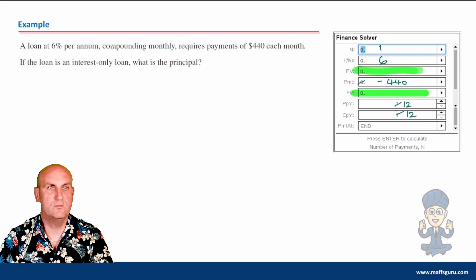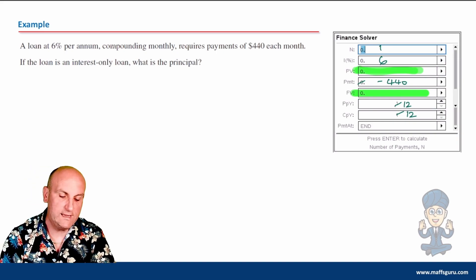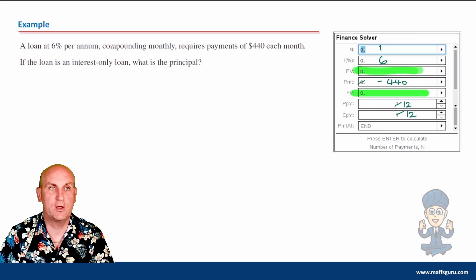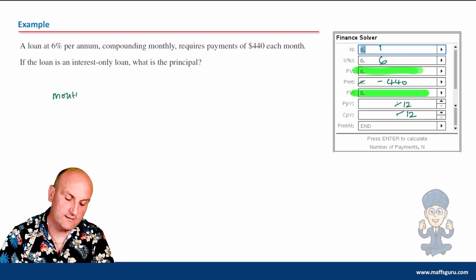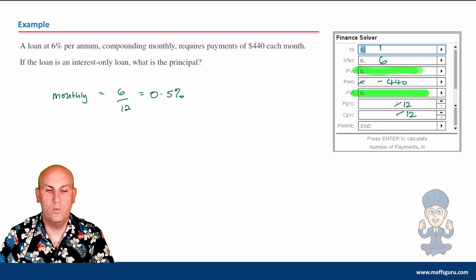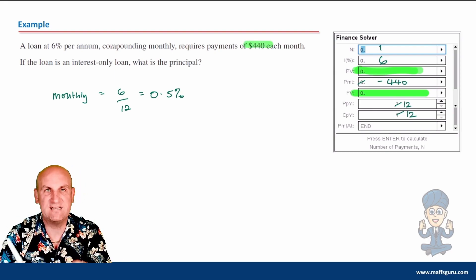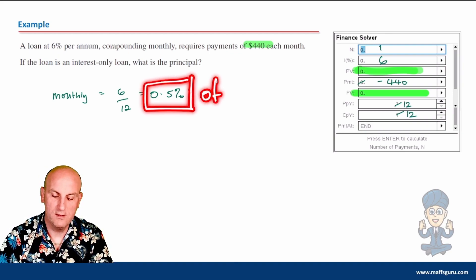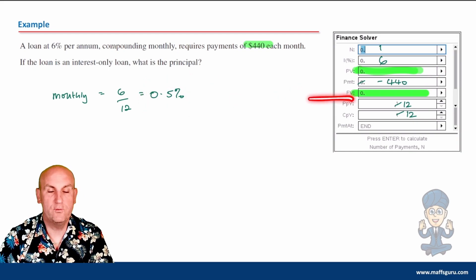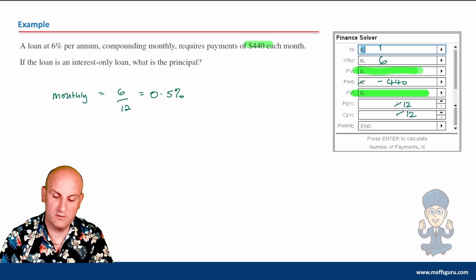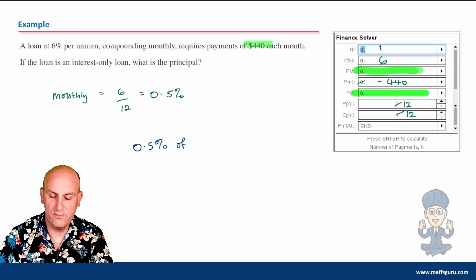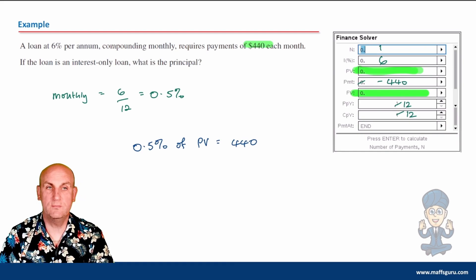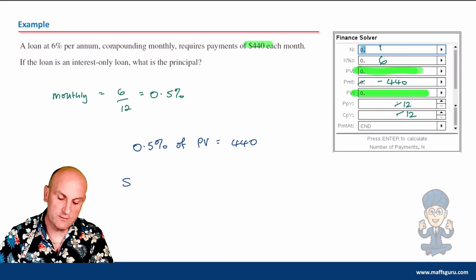They want you to find the principal value, but I'm missing my final value. Remember, for interest-only loans my principal value and final value are the same, but if I don't know one I can't put the other one in. This goes back to the idea that our interest rate is 6% per annum compounding monthly, so my monthly interest rate is 6 divided by 12, which is 0.5%. Half a percent of my principal value is going to give me $440.